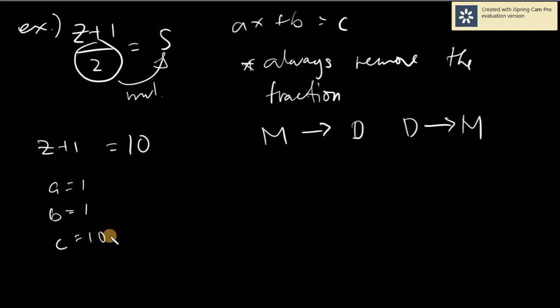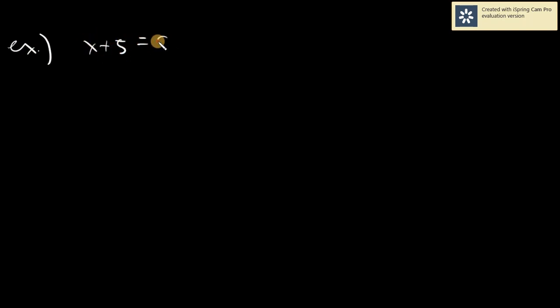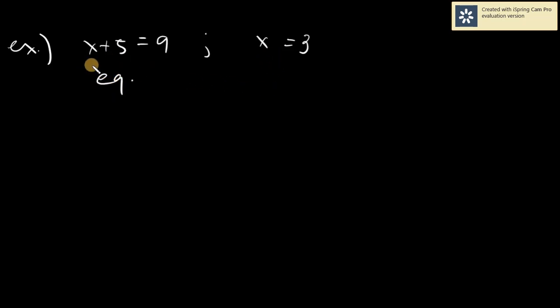So again, any given linear equation can be transformed into the form AX plus B equals C. But we will not deal mainly with that — we will deal with the solutions. For example, number 1: we have X plus 5 equals 9, and you are given X equals 3. You are being asked: is X equals 3 your solution?